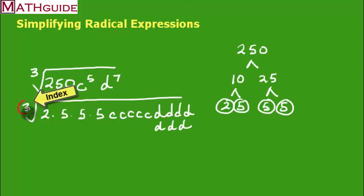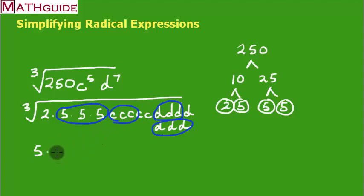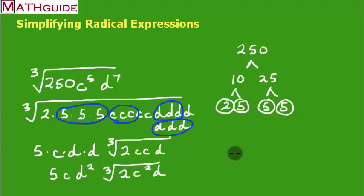This time I'm dealing with the cube root, so now I'm going to have to look for triplets. Let's circle the triplets. Here's a triplet. Here's a triplet. Here's another triplet. And here's a triplet also. It looks like all my triplets are circled. When I see a triplet of 5's, that means one of these 5's is going to come up on the outside. I see a group of c's. I see a group of d's. I see another group of d's. What's left? Underneath the cube root sign, I have a 2, 2 c's, and a d. So now what we do is play cleanup. We multiply all this together. So this is 5 c d squared, and we've got the cube root of 2 c squared d. And there's our final answer.